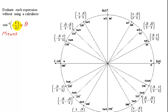If the inverse cosine of negative one-half is equal to theta, that means the cosine of theta has to equal negative one-half.